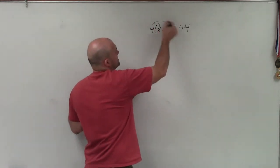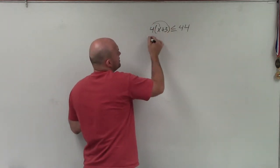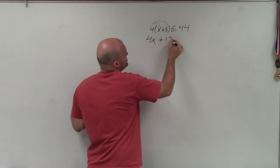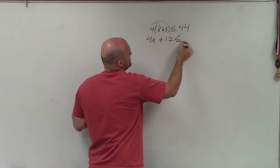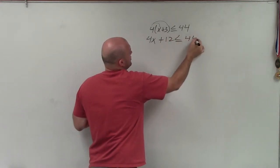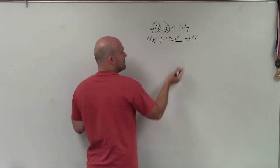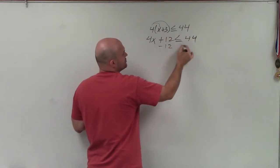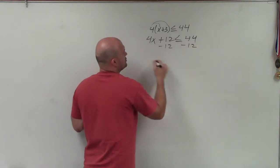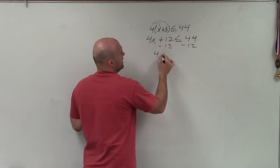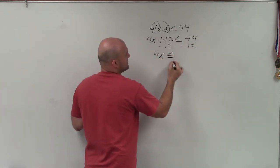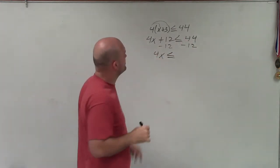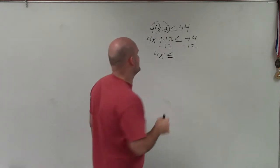To do that, I need to apply the distributive property. So therefore, I have 4x plus 12 is less than or equal to 44. Now, to solve for x, I simply subtract 12, and I have 4x is less than or equal to 32.